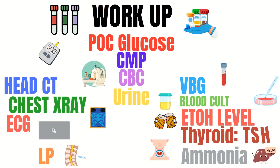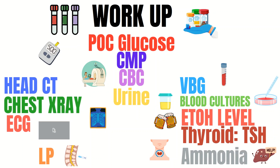Now let's get into the workup commonly seen for altered patients. At the top is the POC glucose, because hypoglycemia can easily be reversed — check a POC glucose for your altered patients. Next is the CMP, CBC, and urine. The CMP allows the team to assess for metabolic issues — you'll get electrolytes, kidney function, fluid balance, and bicarb to help assess acid-base status. The CBC helps look for infections or possible bleeding. Urine can include a urinalysis to check for infection and a tox screen to look for drugs.